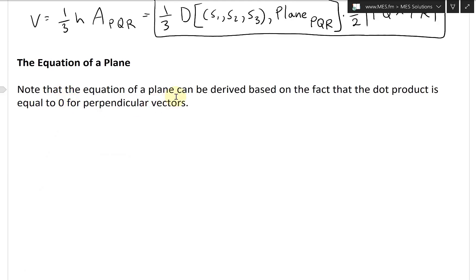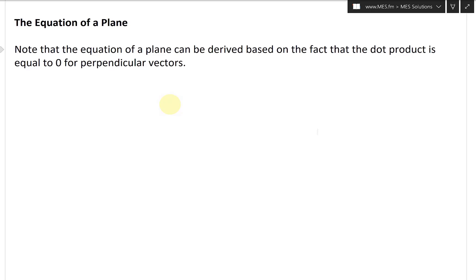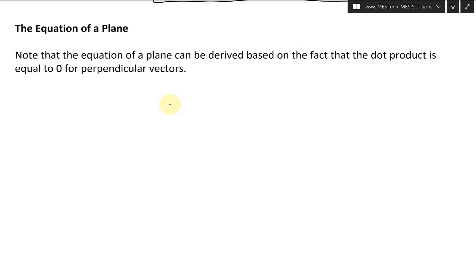Note that the equation of a plane can be derived based on the fact that the dot product is equal to zero for perpendicular vectors. And I haven't covered the equation of a plane before, so it's a good time to start now. What I'm going to do is, let's just draw a plane like this.